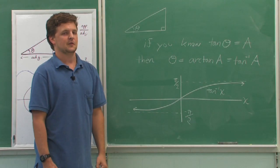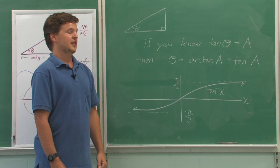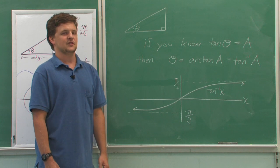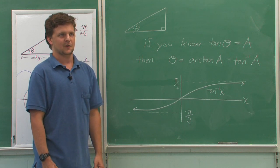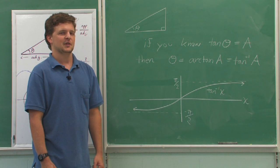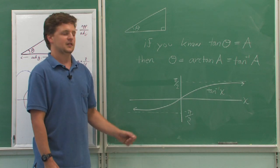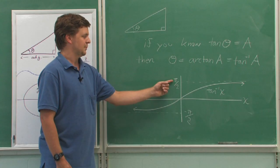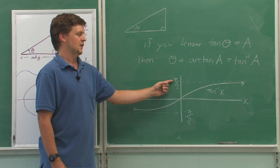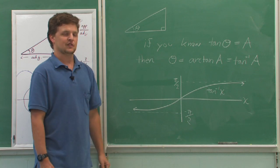This will always give you a result in a real triangle between 0 and pi over 2, or 90 degrees. In general, if you give any argument to inverse tangent, the result is defined to be in between negative pi over 2 and pi over 2. And here's what the graph of inverse tangent looks like.